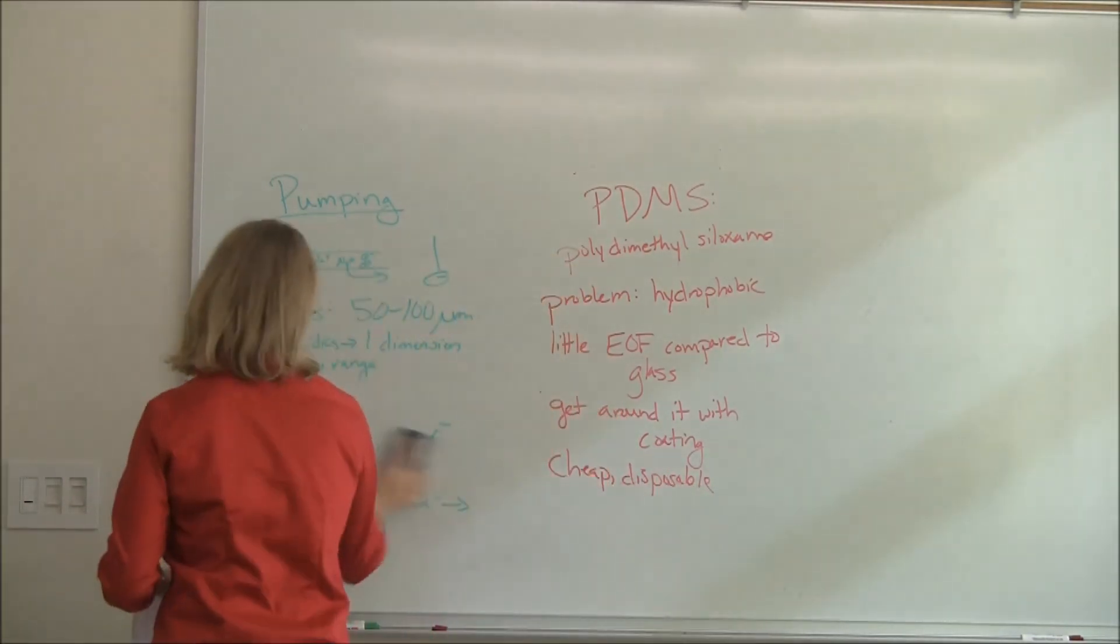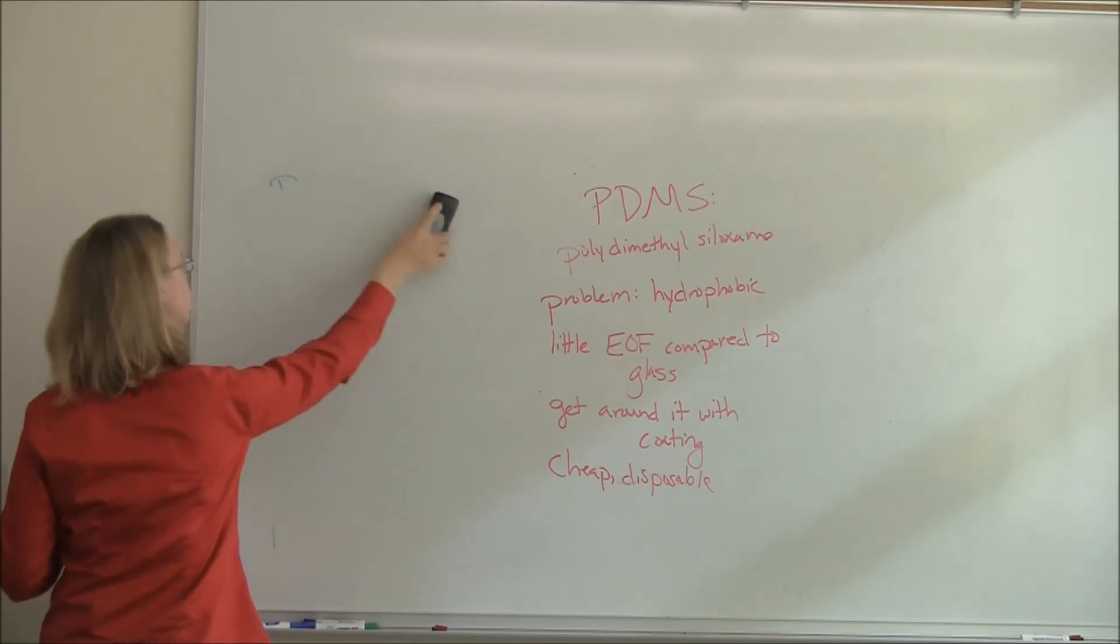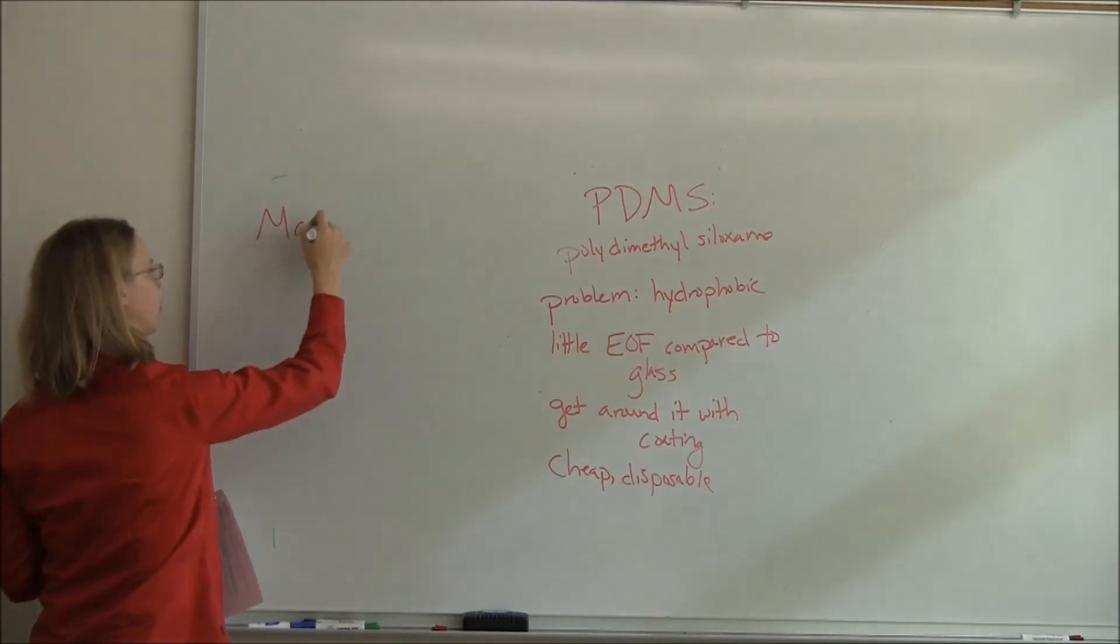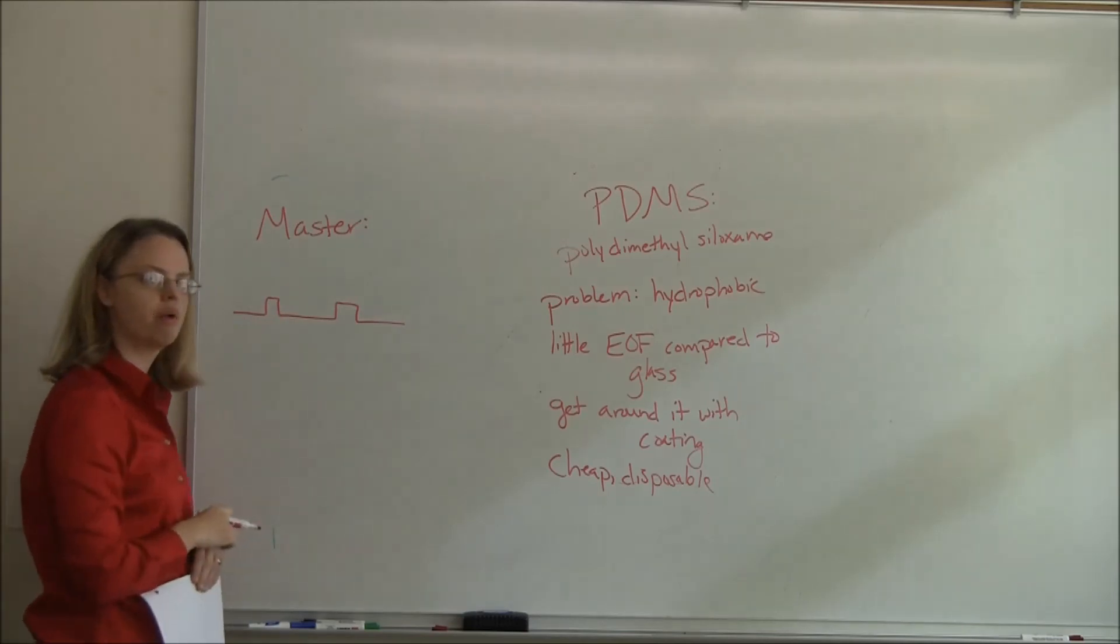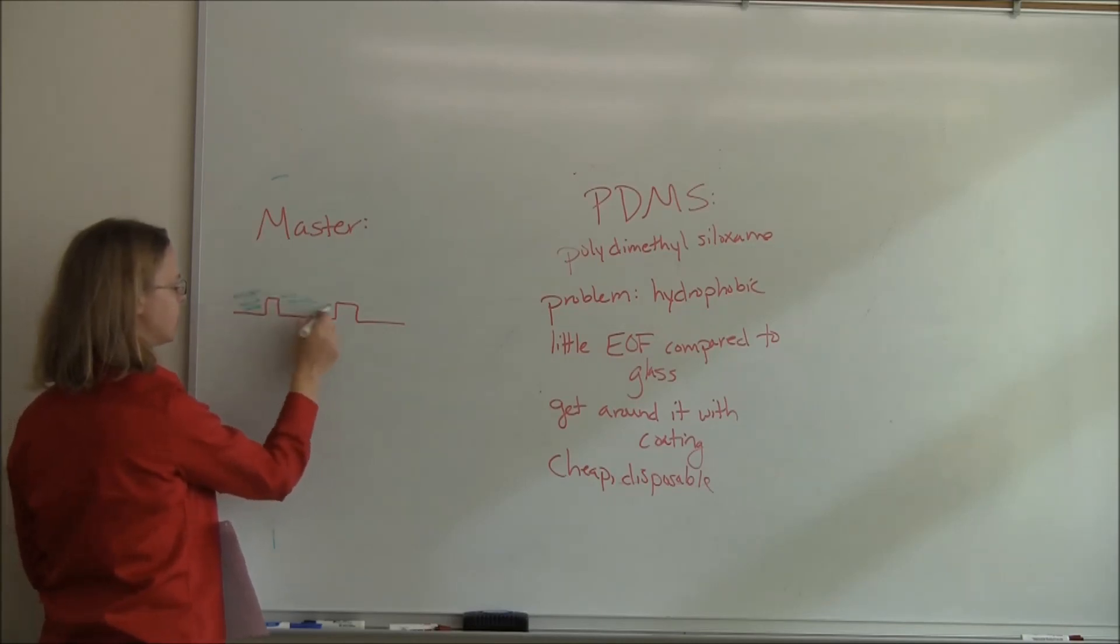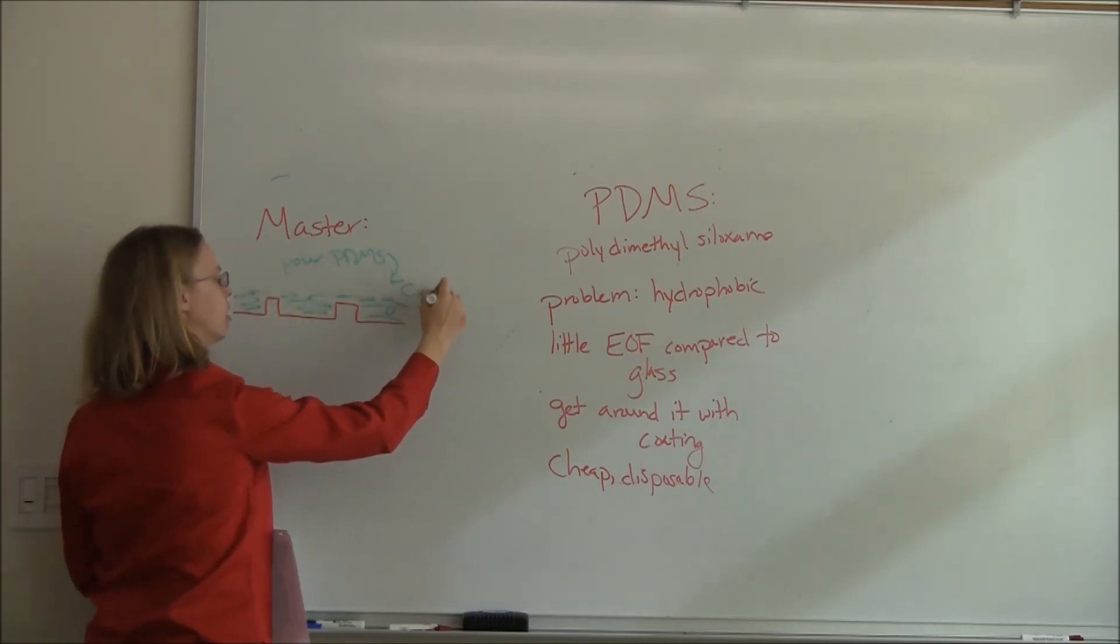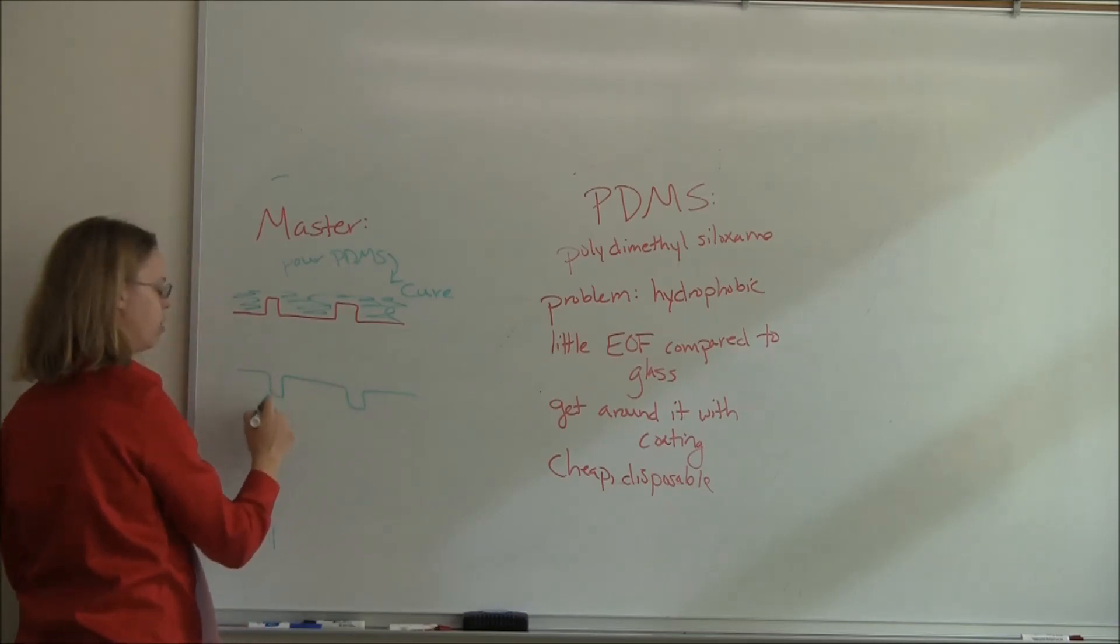So the idea about making chips is fairly universal. Typically you make a master. And so if you want a channel, for the master, you want to make something that has things that go up. And then what you do is you pour your PDMS. So I'm going to pour my PDMS into here, cure it, and then what I end up with is a chip now that has channels running through it.